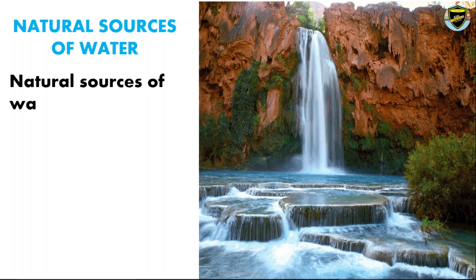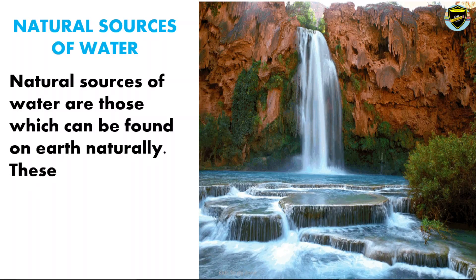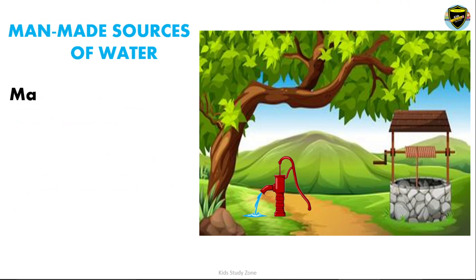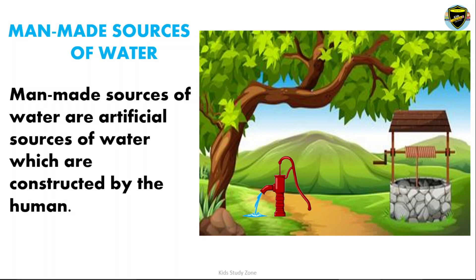Natural sources of water are those which can be found on earth naturally. These sources cannot be constructed by humans. Whereas man-made sources of water are artificial sources of water which are constructed by humans. The main purpose behind this is to store water for future needs and to supply water at particular places where there is scarcity of water.